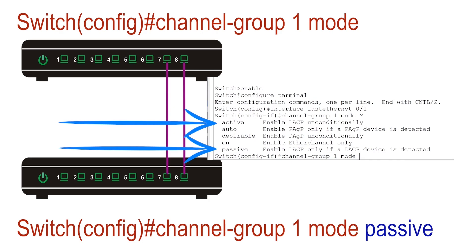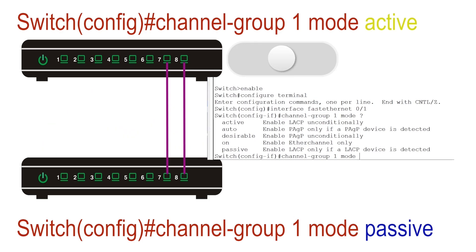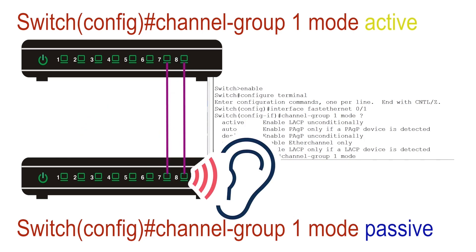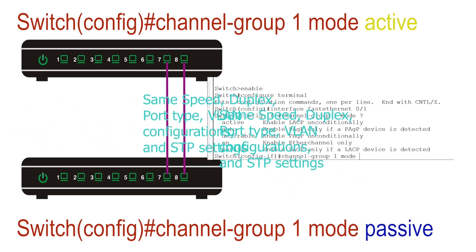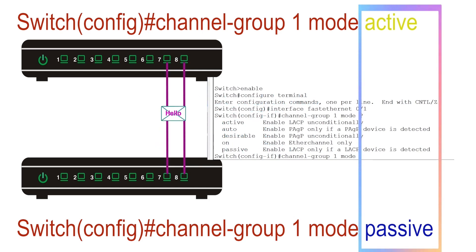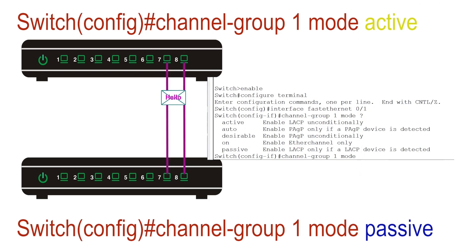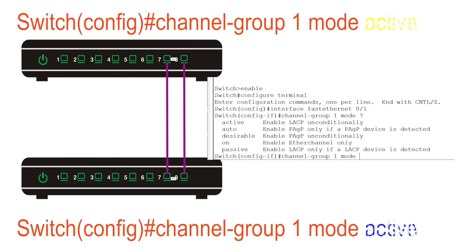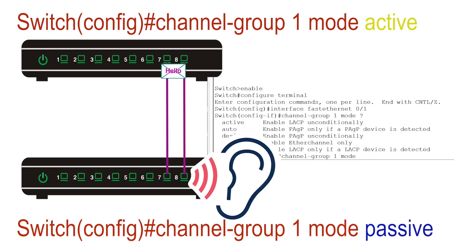LACP uses the active and passive options. If we configure the active option, the switch enables LACP on the port and sends hello messages containing the parameters discussed earlier. If we configure the passive option, the switch does not enable LACP but listens for LACP hello messages. If it receives them and the parameters match, it enables LACP. An EtherChannel will form only when at least one side is configured in active mode. If both ends are in passive mode, the EtherChannel will not form. The best practice is to configure one end in active mode and the other in passive mode, ensuring the EtherChannel forms only when all necessary parameters match.